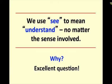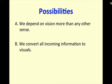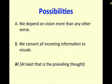Why do we use 'see' to mean understand? Some possibilities. A: maybe we depend on vision more than any other sense. B: we convert all incoming information to visuals. If you said A, kudos. If you said B — thank you for playing. We do not convert all incoming information to visuals, though we certainly try to see what people are talking about. So A: we depend on vision. We gather more information through our vision than any other way — at least this is the prevailing thought.